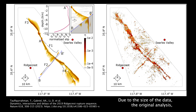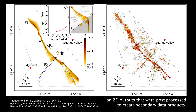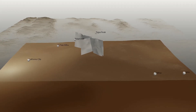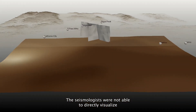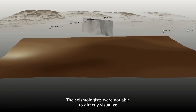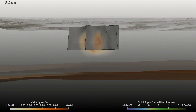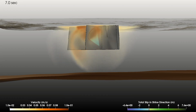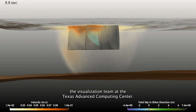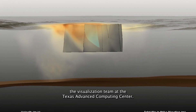Due to the size of the data, the original analysis published in Nature earlier this year was based on 2D outputs that were post-processed to create secondary data products. The seismologists were not able to directly visualize the volumetric properties they study within the Earth. For this reason, they worked with the visualization team at the Texas Advanced Computing Center.